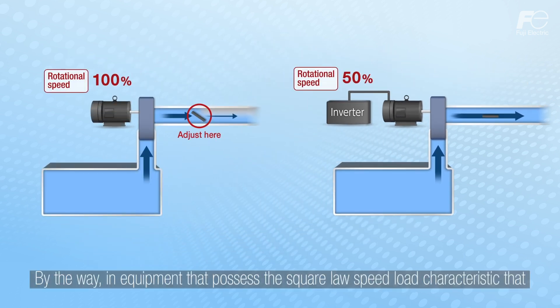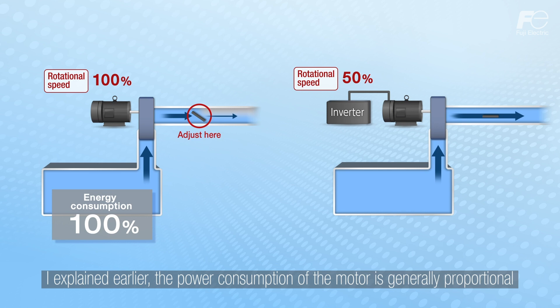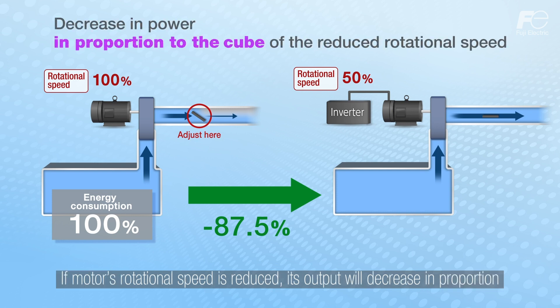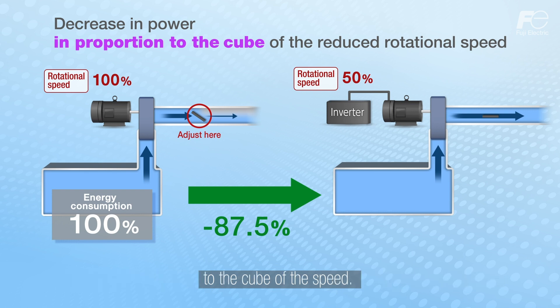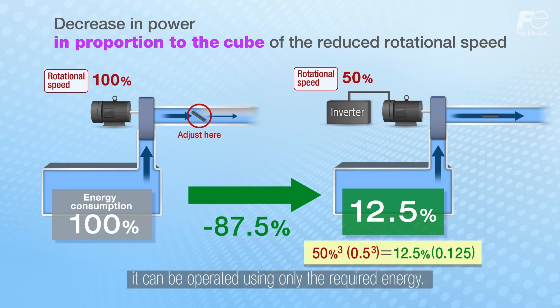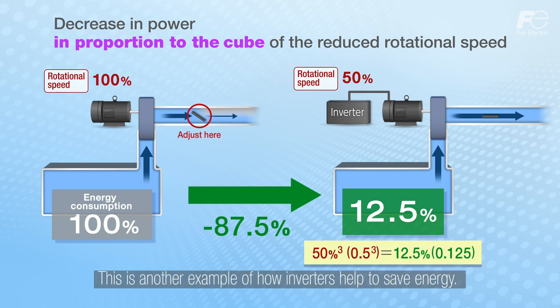In equipment that possesses the square law speed-load characteristic, the power consumption of the motor is generally proportional to the cube of the motor's rotational speed. If the motor's rotational speed is reduced, its output will decrease in proportion to the cube of the speed. If the pump is operated at a rotational speed consistent with the flow rate, it can be operated using only the required energy. This is another example of how inverters help to save energy.